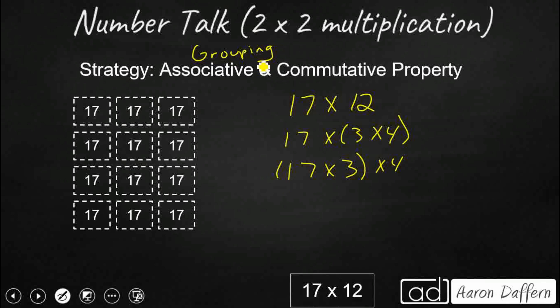So instead of 17 groups of 3, we'll do 3 groups of 17. But I need to flip the order again because I don't really want to draw 17 groups of 3. I'd rather do 3 groups of 17. And then really what I want here is I want 4 groups of 3 groups of 17. And that's what I have here. 1, 2, 3 groups of 17.